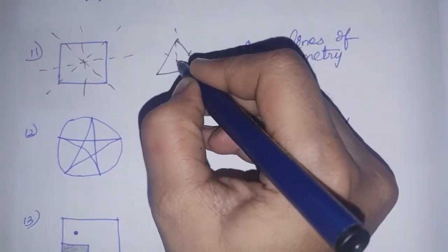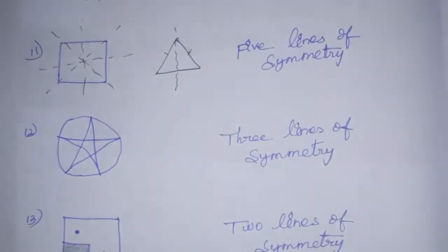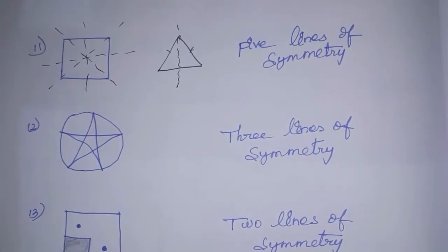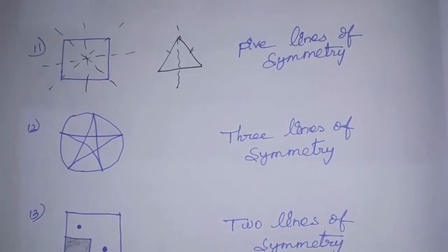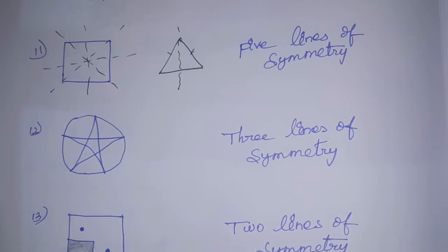If you have two equal sides in an isosceles triangle, you can see the same line of symmetry. In this diagram you can see the same line of symmetry. Now, if you have a rectangle with two equal sides, we can draw two lines of symmetry.